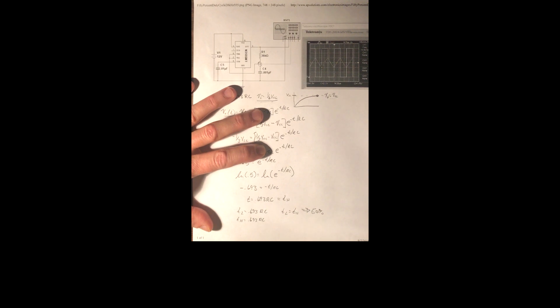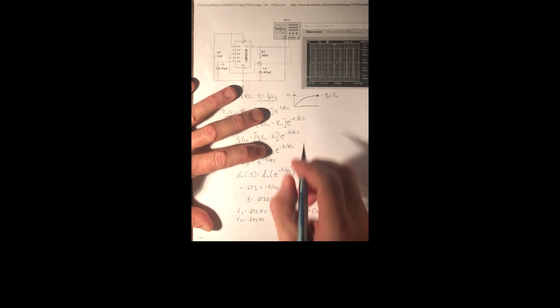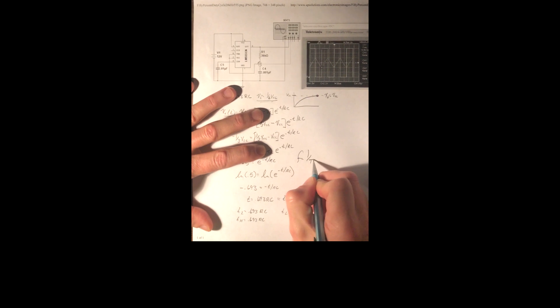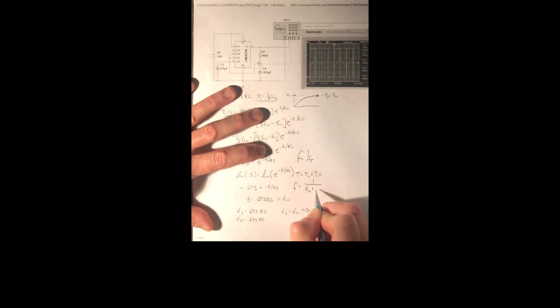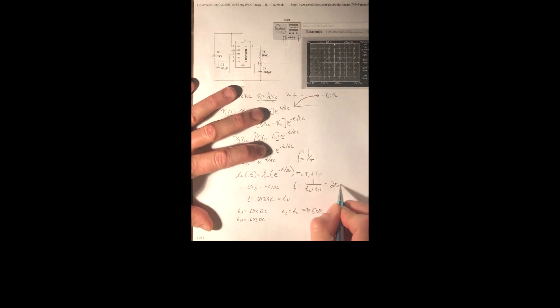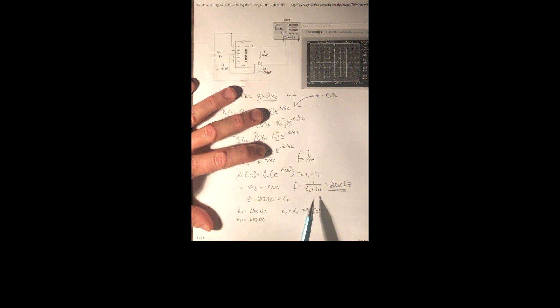As far as the frequency goes, that's pretty straightforward. We know that frequency equals one over the period, and the period is just t sub L plus t sub H. So our frequency equals one over t sub L plus t sub H, and for this resistive network this turns out to be 20 kHz. That's all there is to it — it's a pretty simple circuit, pretty straightforward to analyze. If you want to see this in more detail with the equations and also the KVL analysis with the differential equation, please go to my website and check it out. Take care.